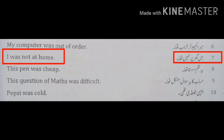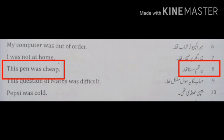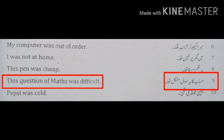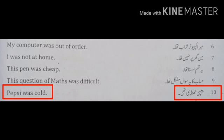Number 7: Main ghar par nahin tha. — I was not at home. Number 8: Ye qalam sasta tha. — This pen was cheap. Number 9: Hisaab ka ye sawal mushkil tha. — This question of maths was difficult. Number 10: Pepsi thandi thi. — Pepsi was cold.